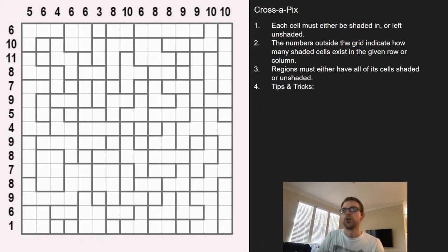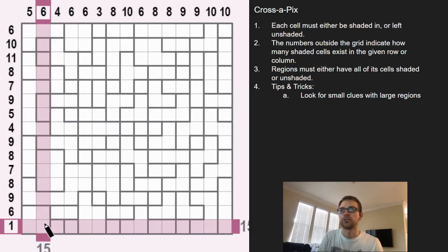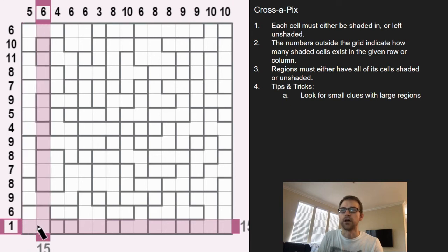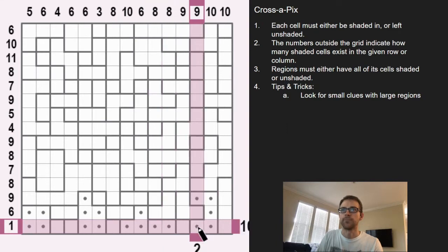The first place I typically start is looking for the smallest clues that have large regions in that row or column. This one for instance is a great place to start because you can cancel out all of the regions that are more than one cell wide. If I shade this in, that would break this clue, so any of the two-or-more-wide regions we can put a dot or pencil mark saying those are not shaded in.